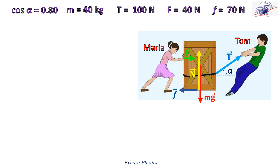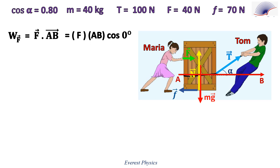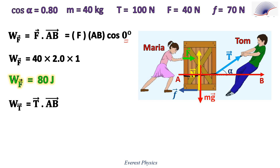Now for the work done by force F exerted by Maria: it is the dot product of F and AB. Since F and the displacement vector AB are in the same direction, the angle between them is zero and cosine zero equals one. Plugging in the numbers gives the work done by F equal to 80 joules. For the tension force T, the angle between T and displacement AB is alpha, so the work done equals T times AB times cosine alpha.